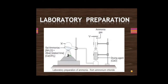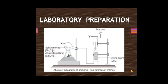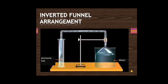The test tube should be kept inverted because ammonia gas is lighter than air — it will be collected by the downward displacement of air. If you want dry ammonia gas, it passes through the tower of quick lime (calcium oxide). If you want ammonium hydroxide, the gas has to be dissolved in water.